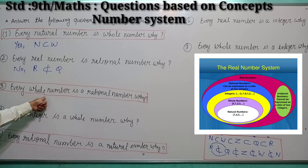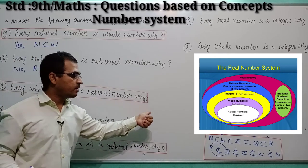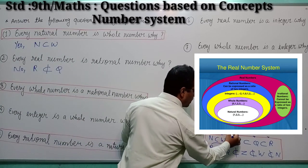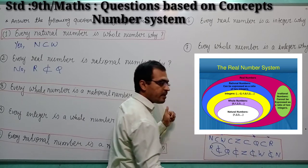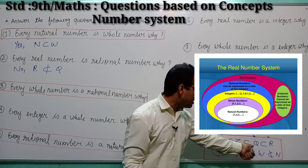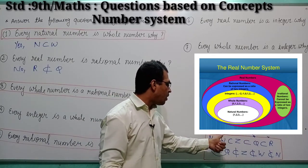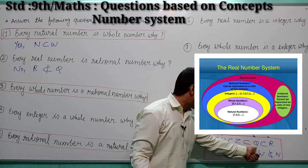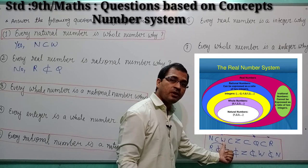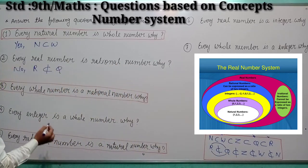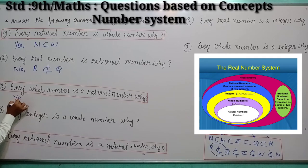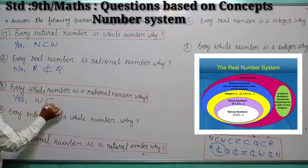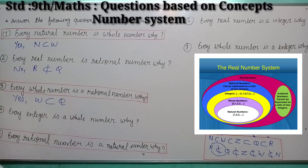The third question: every whole number is a rational number. Yes — because rational number includes all the elements of whole number. So here you write: yes, every whole number is a rational number.